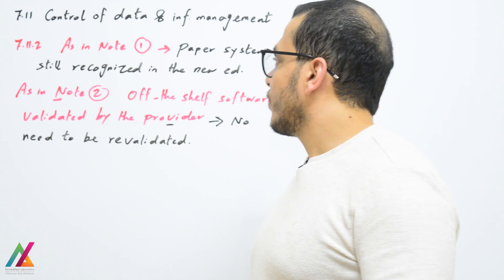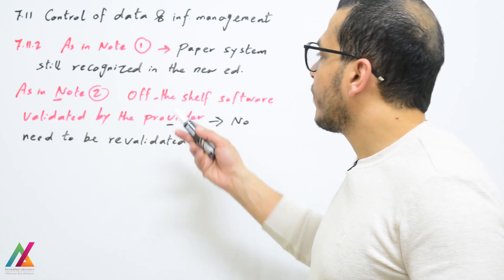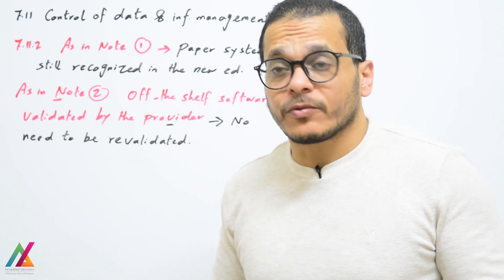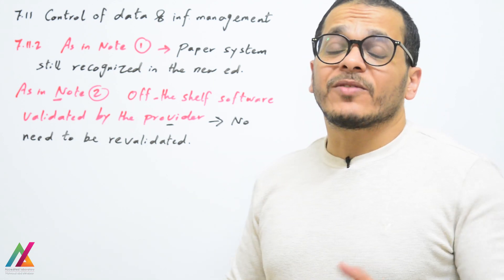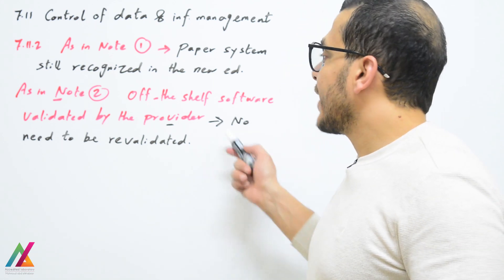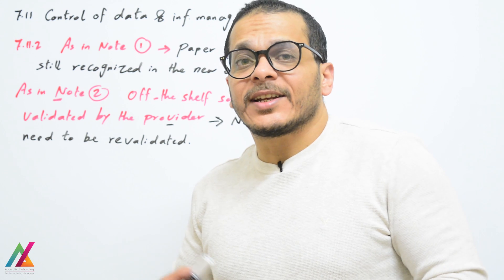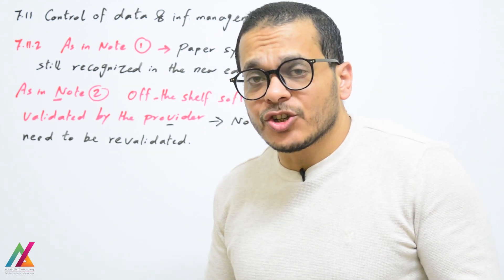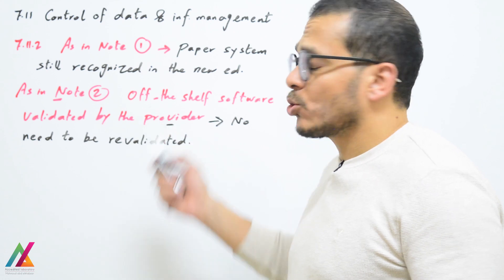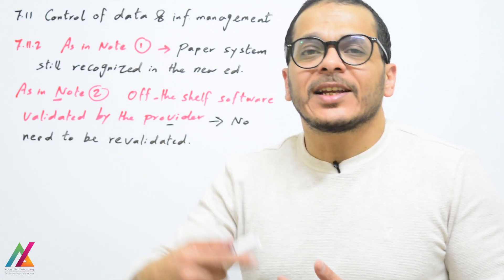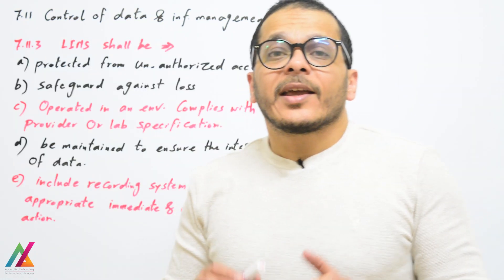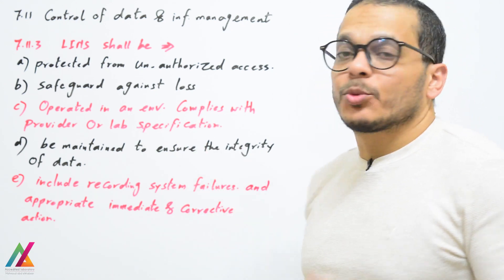As mentioned in note one, paper systems are still recognized in this edition. Commercial off-the-shelf software, ready-made software, shall be validated by the provider and there is no need to be re-validated by the lab. But if there is any modification done to these softwares, they shall be re-validated by the provider again.